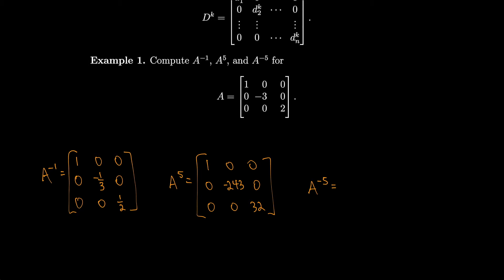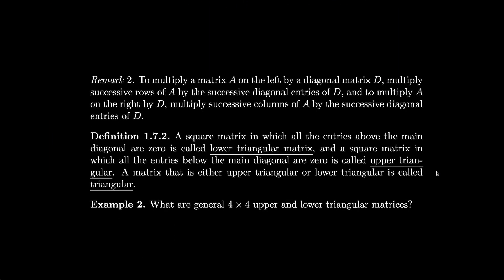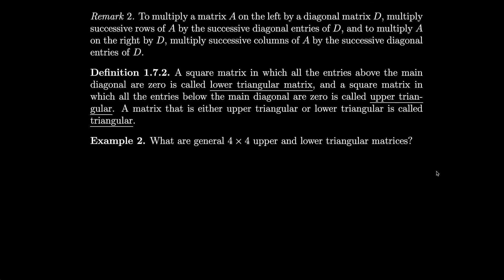A to the minus fifth is similar: we get one, negative one over 243, and one over 32. To multiply matrix A on the left by a diagonal matrix D, multiply successive rows of A by the successive diagonal entries of D. To multiply A on the right by D, multiply successive columns of A by the successive diagonal entries of D — we simply scale the rows or columns.